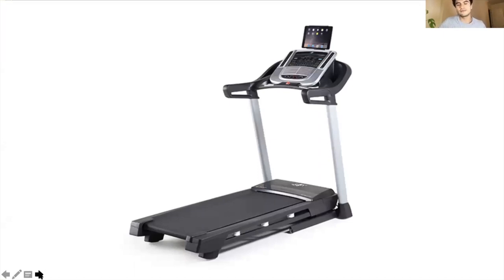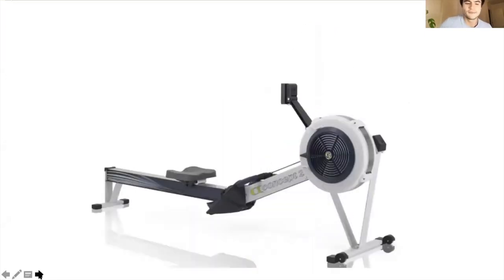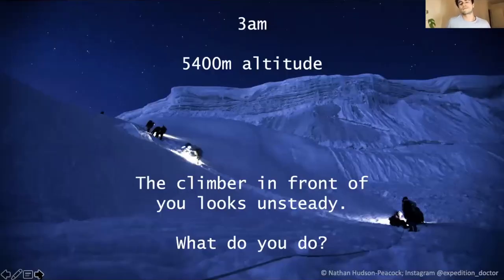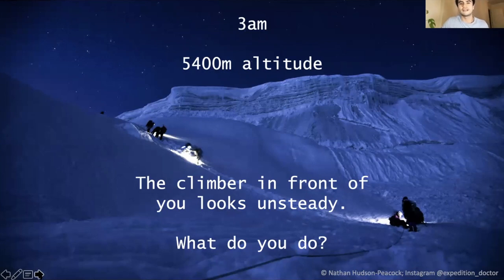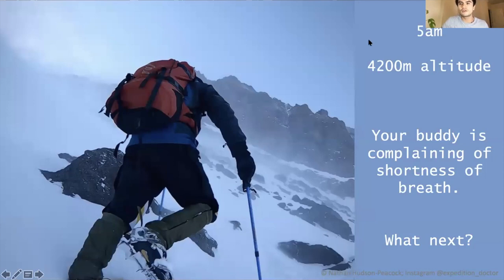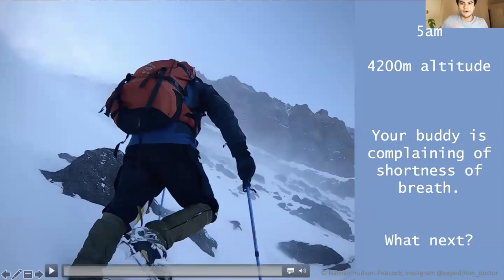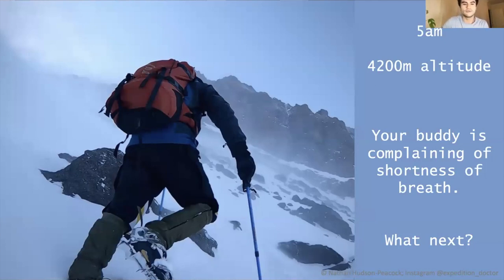So have a think about what your own treadmill is and how you might find your rowing machine. Without further ado, let's crack on. Scenario one: imagine it's three o'clock in the morning, you're five and a half thousand metres up at altitude, and the climber in front of you looks unsteady. What do you do? There's another case: it's five o'clock in the morning, you've been up since midnight with your head torch on, crampons on your feet, climbing for the last four or five hours, seen the most incredible sunrise, and you're just a couple of hundred metres from the summit — but your buddy is really complaining of shortness of breath. What do you do?